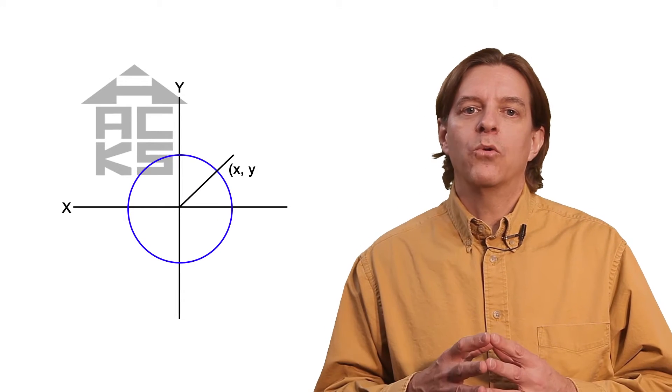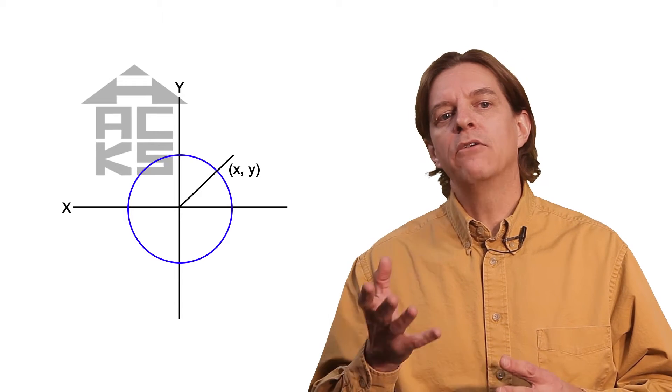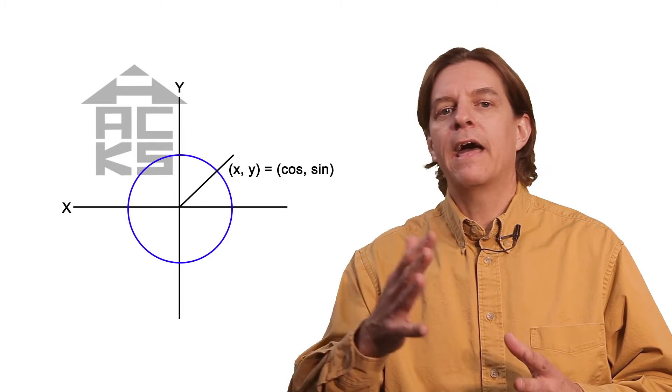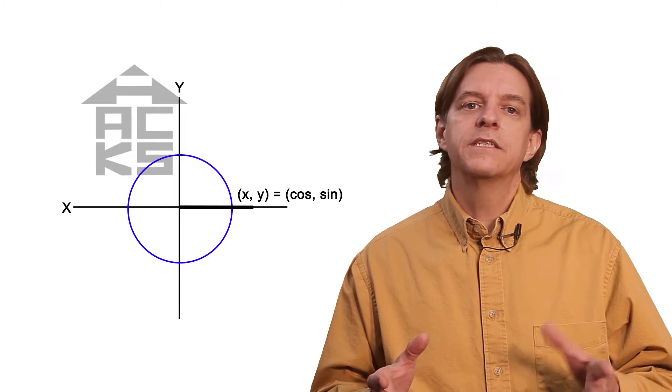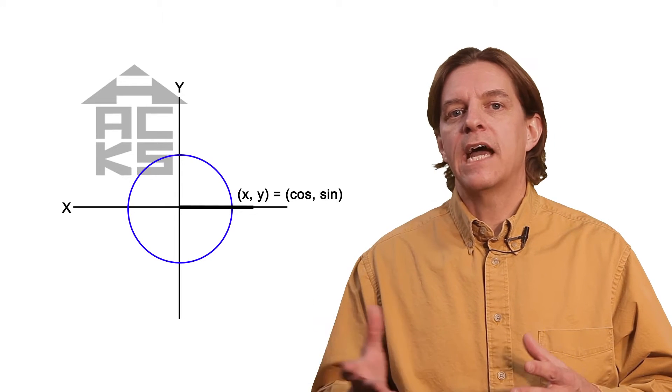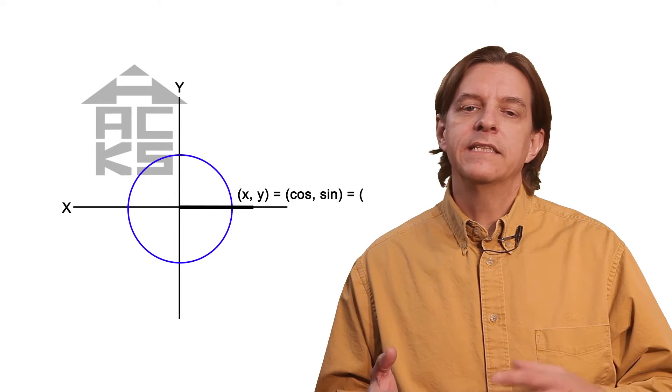That one place will have an x and y-coordinate that by definition is the value of the cosine and sine functions at that angle. So for 0 degrees, the place where the circle intersects the x-axis, cosine will be 1 and sine will be 0.